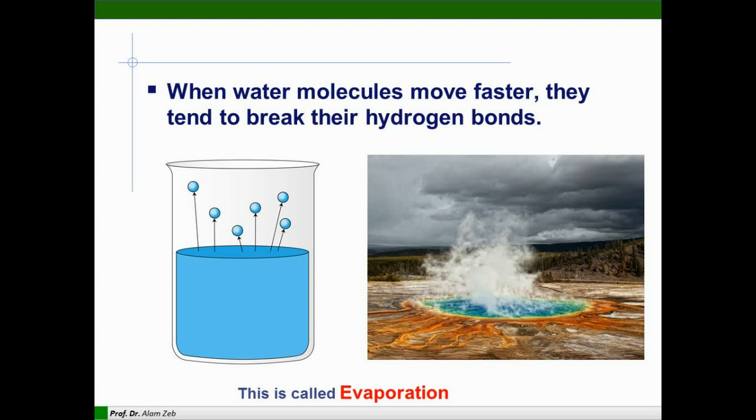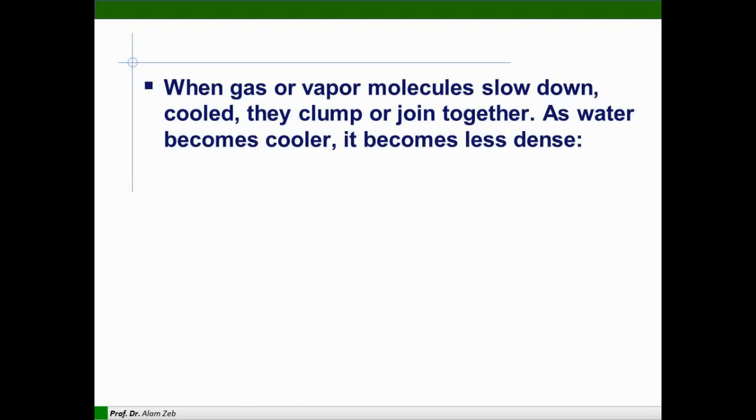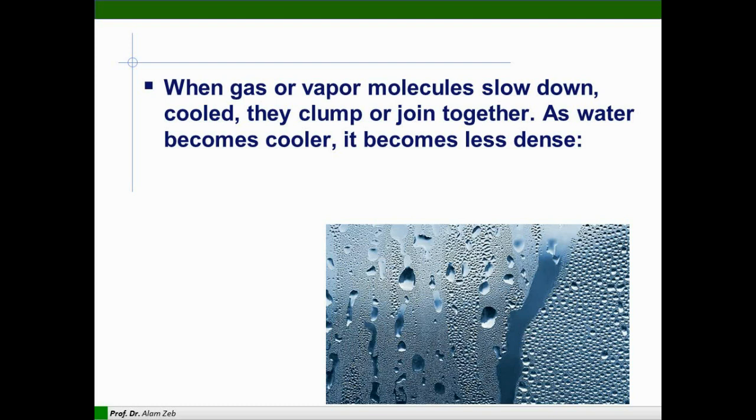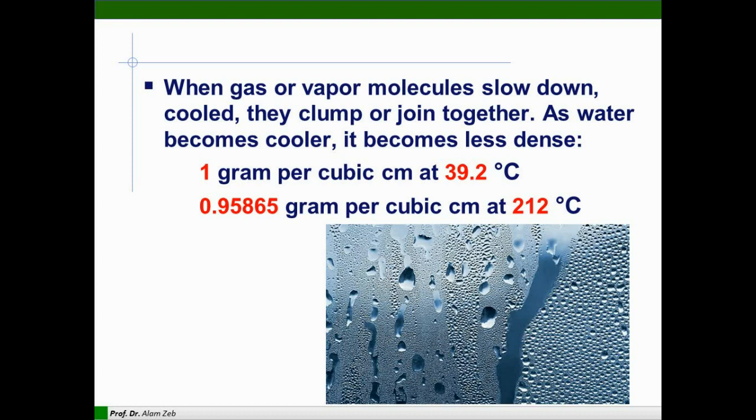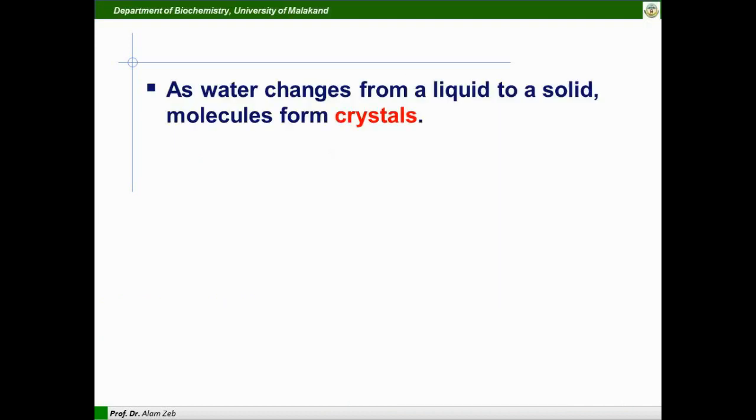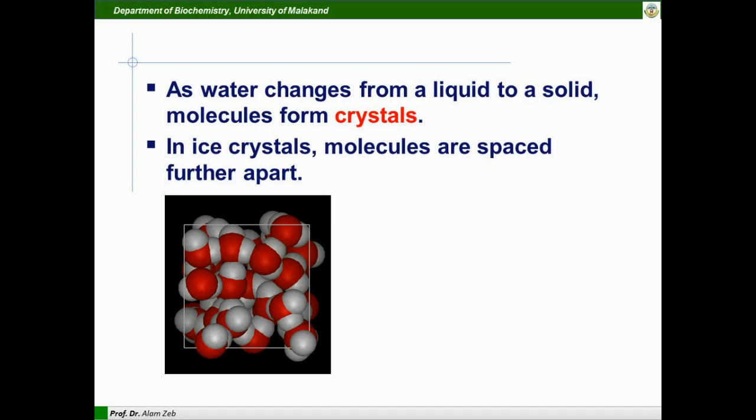When water molecules move faster they tend to break their hydrogen bonds. This is called evaporation, which is a very normal process in summer. When gas or vapor molecules slow down or cool, they clump or join together. As water becomes cooler it becomes less dense. This process is called condensation in which water molecules condense back.